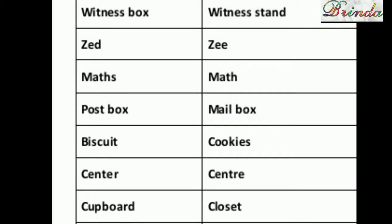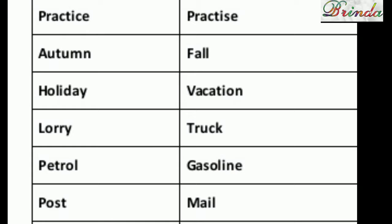The letter Z: in British English we say Z (zed); in American English we say Z (zee). X-Y-Z pronunciation differs. Maths is British English; math is American English — note the S. Post box is British English; mailbox is American English. Biscuit is British English; cookies is American English. Centre — C-E-N-T-R-E — is British English; center — C-E-N-T-E-R — is American English. Cupboard — close the U sound — is British English; closet is American English.